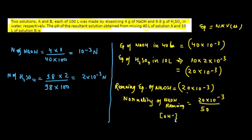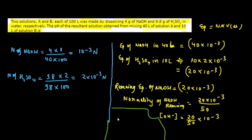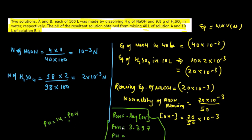Since NaOH has N factor = 1, normality equals molarity. [OH⁻] = 4×10⁻⁴ M. pOH = −log(4×10⁻⁴) = 3.397. pH = 14 − pOH = 14 − 3.397 = 10.603. Answer: 10.603.